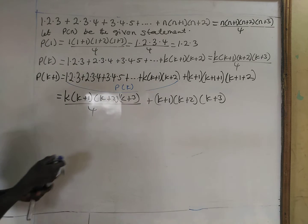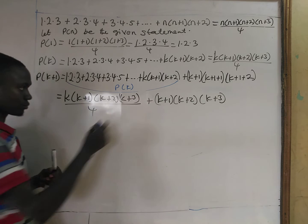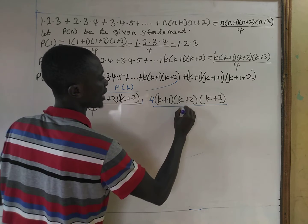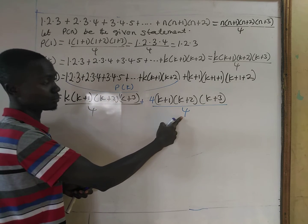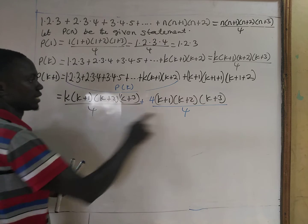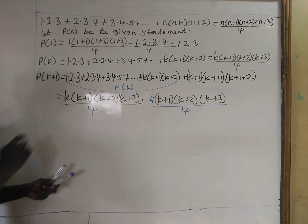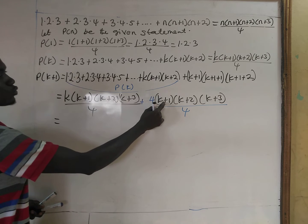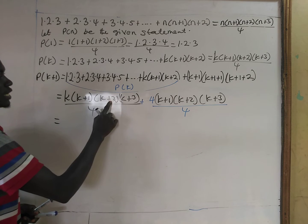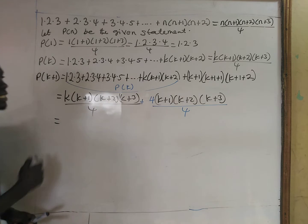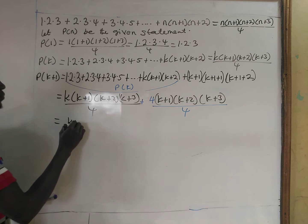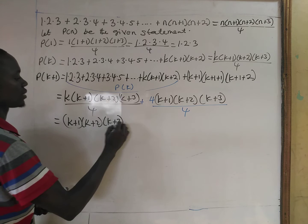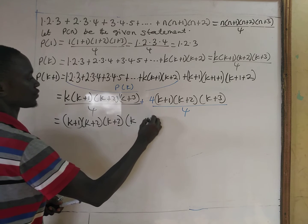Now you can see that the first part has denominator 4. So we multiply the second term by 4 and divide by 4 — since 4 divided by 4 is 1 — so that both terms have the same denominator. Now we have k(k+1)(k+2)(k+3) plus 4(k+1)(k+2)(k+3), all over 4. We can then factor out (k+1)(k+2)(k+3), giving us (k+1)(k+2)(k+3)(k+4) all divided by 4.